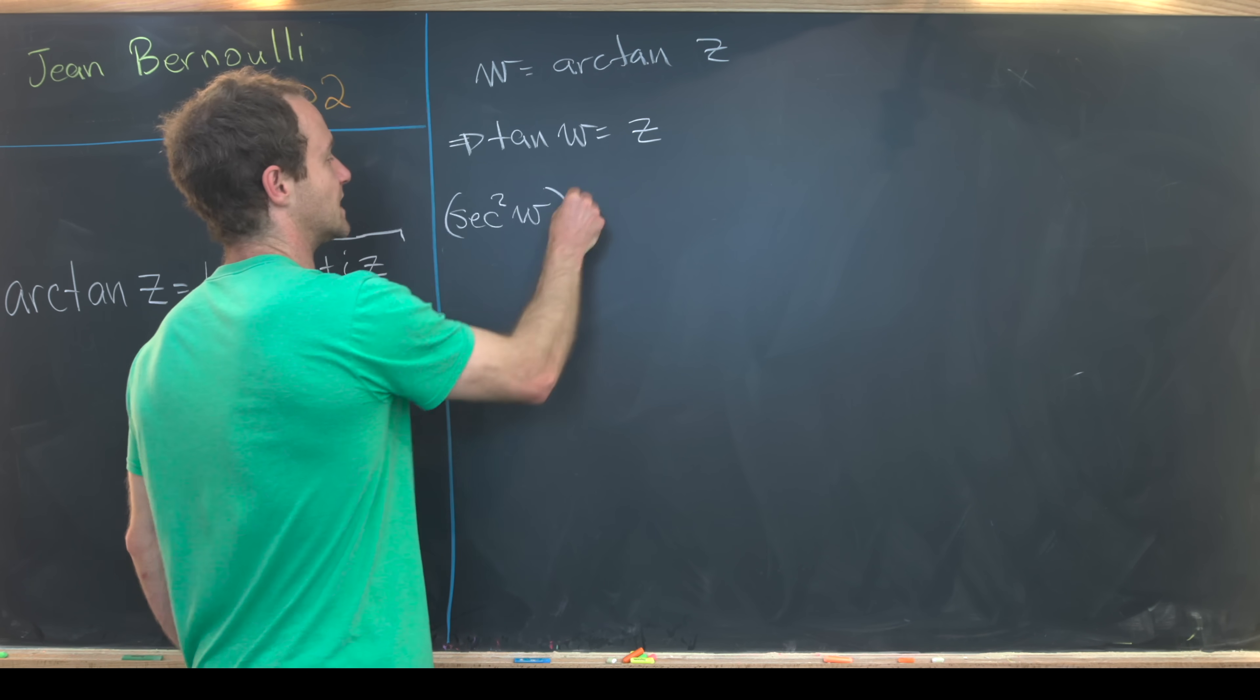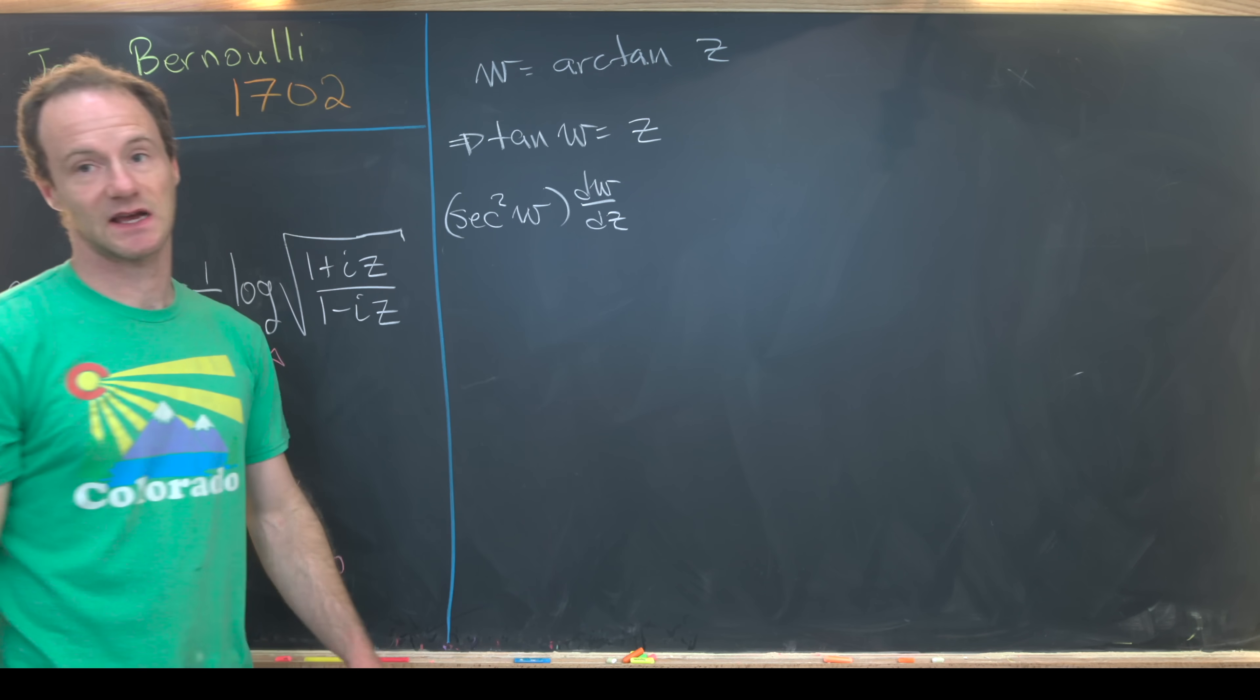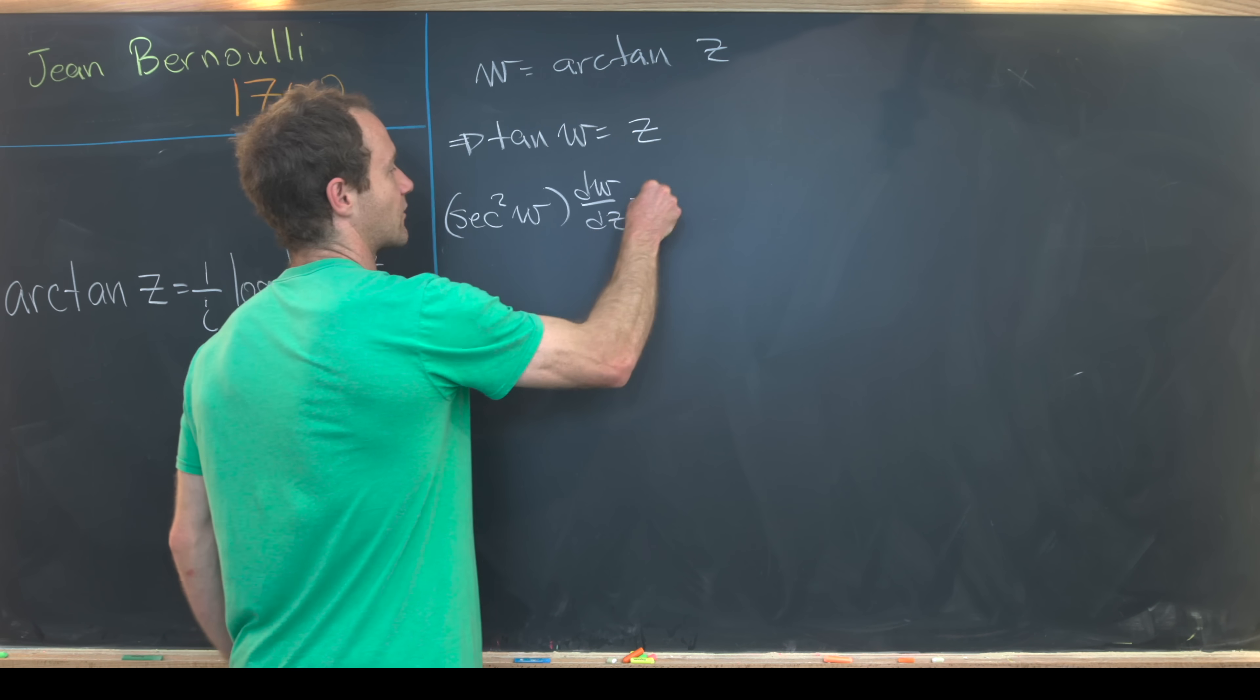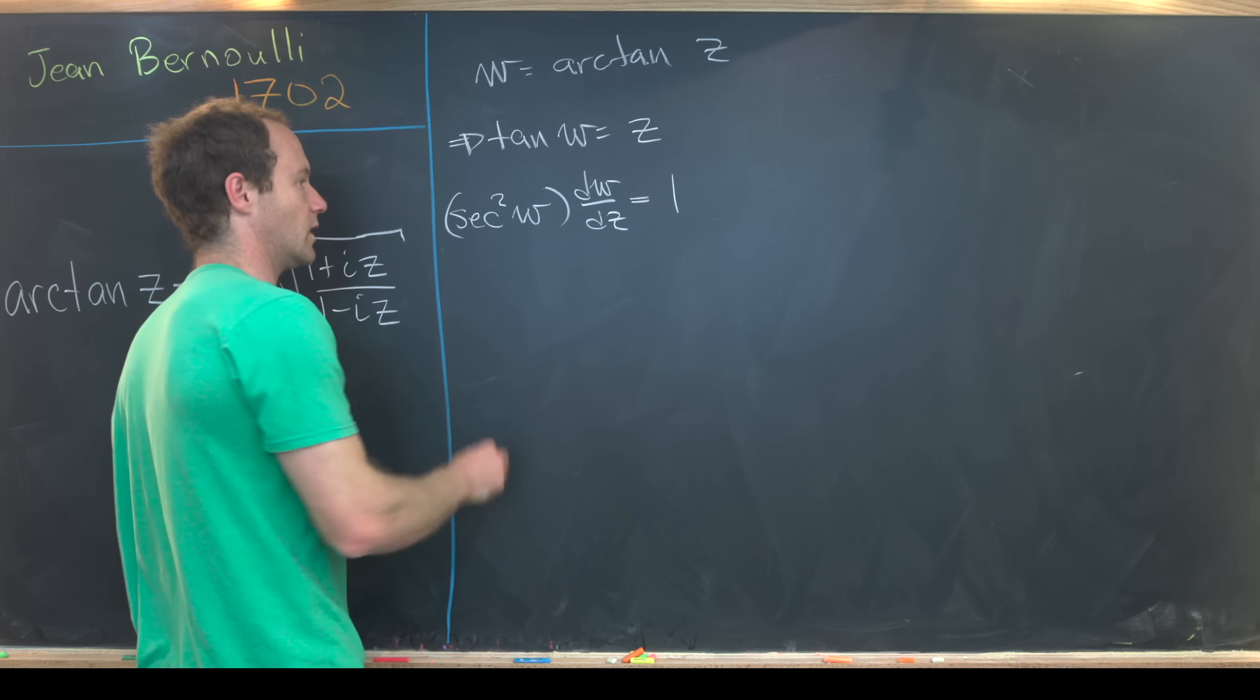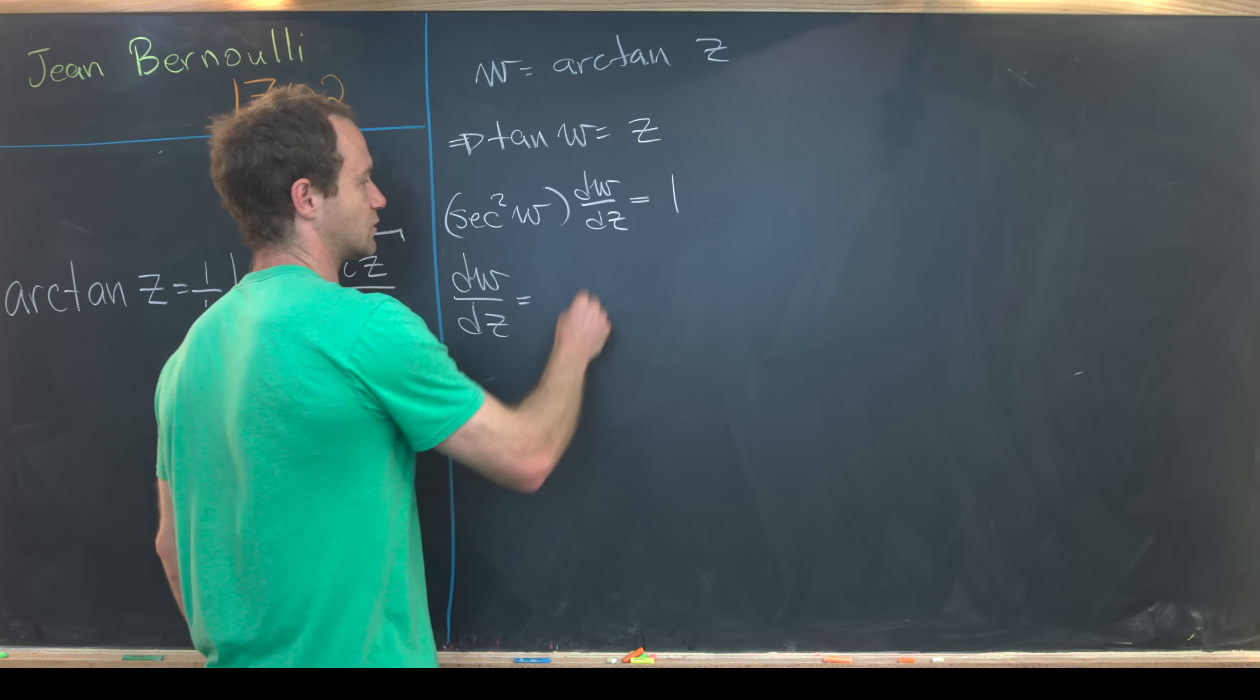Now we'll take the derivative of both sides with respect to z. So that'll give us secant squared w times dw/dz on the left-hand side, keeping in mind the chain rule, w is a function of z. And then on the right-hand side, we'll just have one.